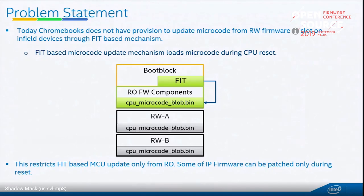The FIT table can contain multiple FIT entries where you have the address of the firmware you want to load, the size of the update binary that needs to be loaded, and a generic type field. Type zero is for microcode; you have provisions to insert other binaries such as ACM TXT, which is dictated by the type field.